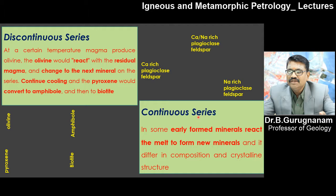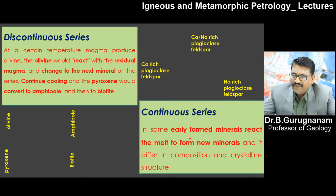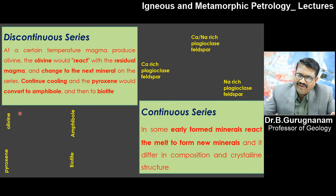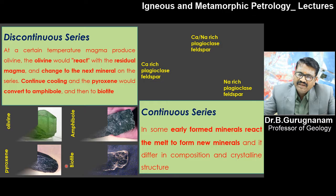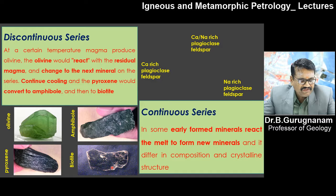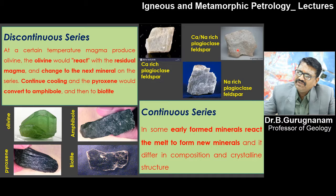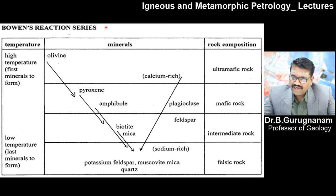On the other side, Bowen found that when temperature and pressure reduce, there is a continuous series of deposition from feldspar to quartz. Early-formed minerals react with the melt to form new minerals that differ in composition and crystal structure in a continuous process. You have olivine, then pyroxene, then amphibole and biotite on one side. On the continuous side, you have calcium-rich plagioclase grading to sodium-rich plagioclase — calcium and sodium end members. This is how it forms in a continuous series, and Bowen explained this with a very classical diagram.